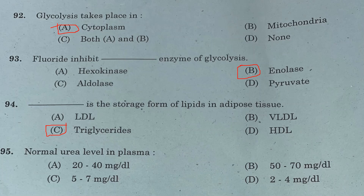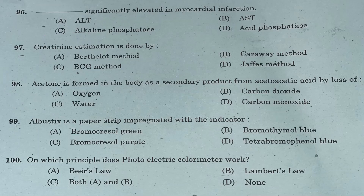Question 95: Normal urea level in plasma — Option A: 20–40 mg per deciliter. Option B: 50–70 mg per deciliter. Option C: 50–7 mg per deciliter. Option D: 2–4 mg per deciliter. Answer is Option A, 20–40 mg per deciliter.